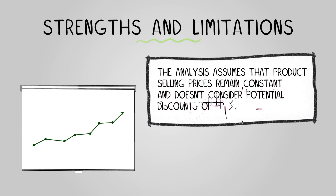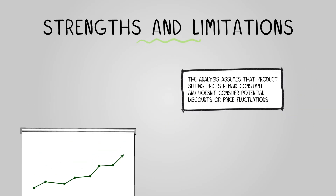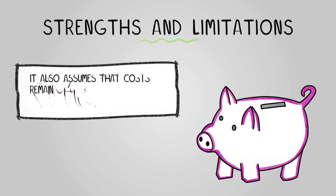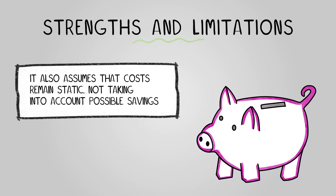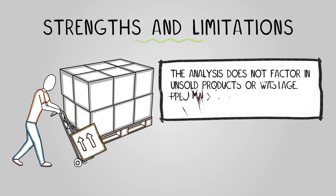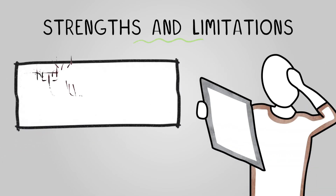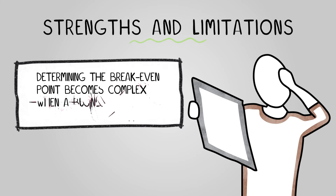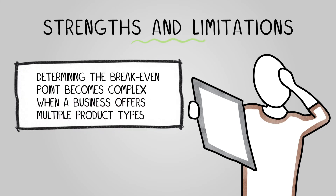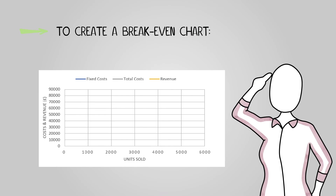However, break-even analysis does have limitations. The analysis assumes that product selling prices remain constant and doesn't consider potential discounts or price fluctuations. It also assumes that costs remain static, not accounting for possible savings such as bulk discounts. Additionally, it does not factor in unsold products or wastage, and determining the break-even point becomes complex when a business offers multiple product types.